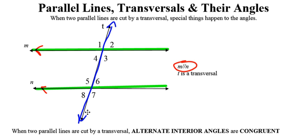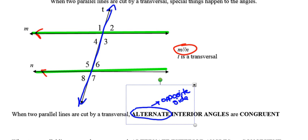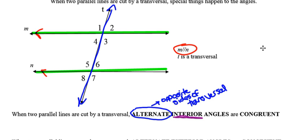Whenever two parallel lines are cut by a transversal, it just so happens that alternate interior angles are congruent. That's only truly helpful if you know what alternate interior angles are. Alternate refers to the transversal — whenever we see that word alternate, we're going to think opposite sides of the transversal. Interior, just like interior paint at Home Depot, refers to inside the parallel lines.